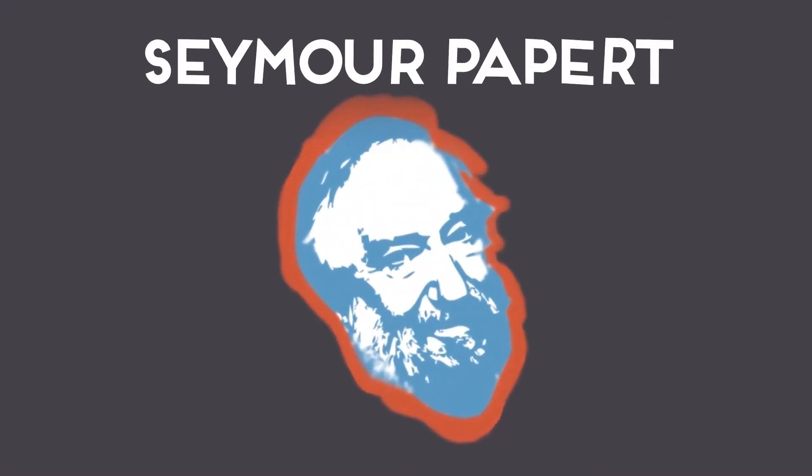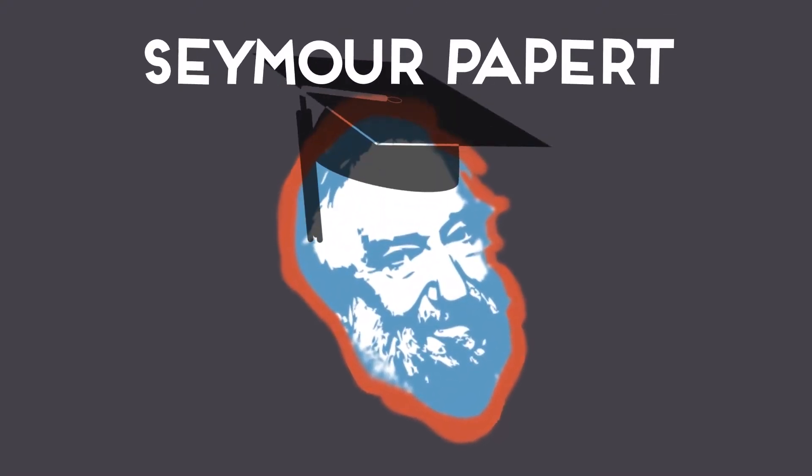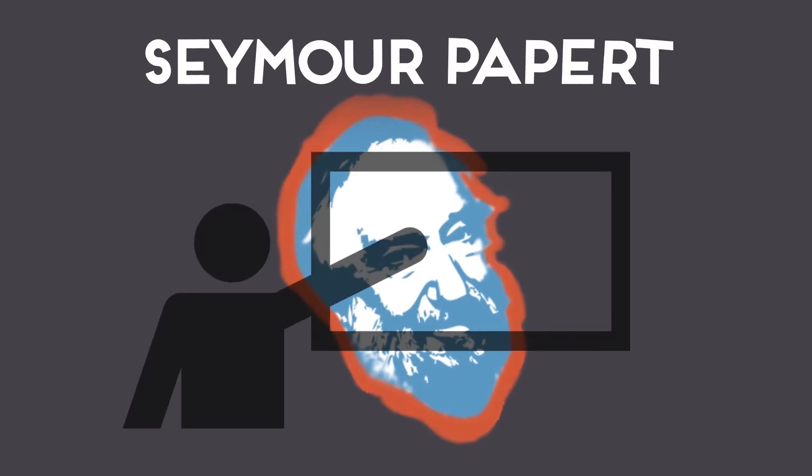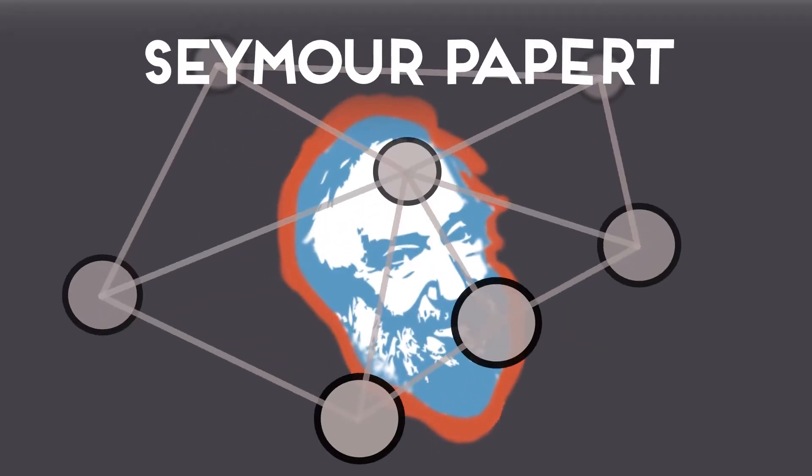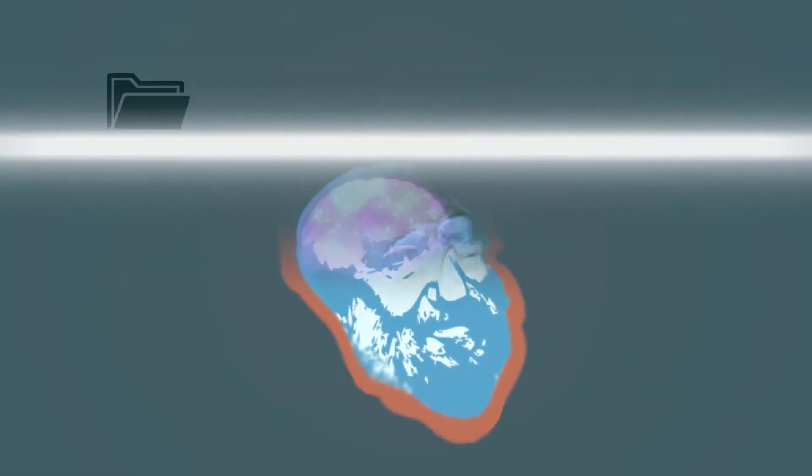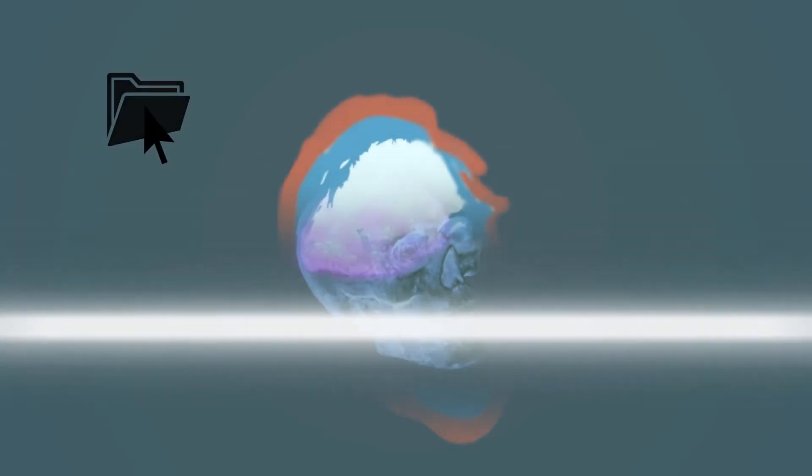Seymour Papert was born in 1928 in Pretoria. He was an MIT mathematician, computer scientist, educator, and was known as the father of educational computing. He was recognized as a seminal thinker about ways in which computers can change learning.